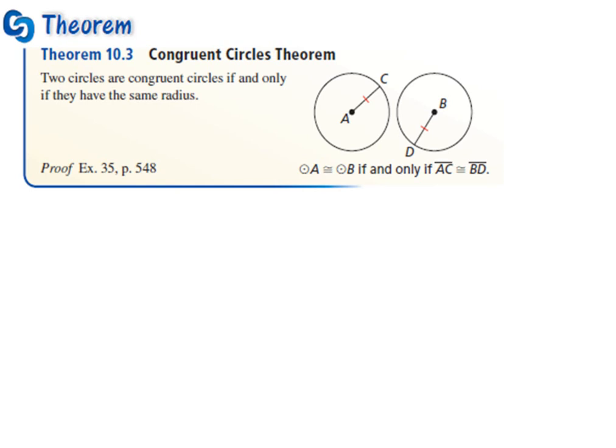So you'll notice here that line segment AC and line segment DB are congruent, and if the radius is congruent, then we know the circles are congruent.